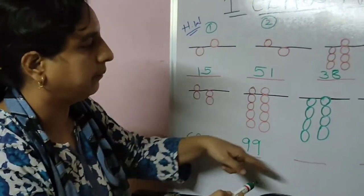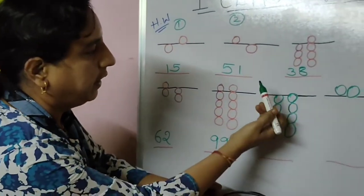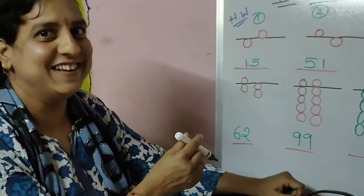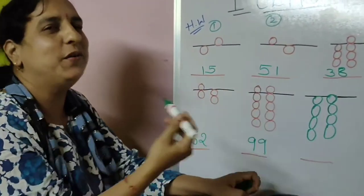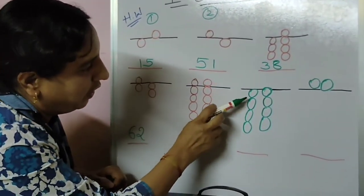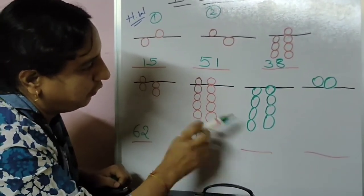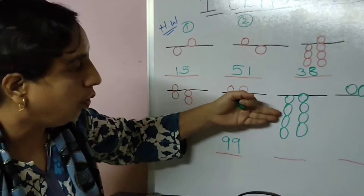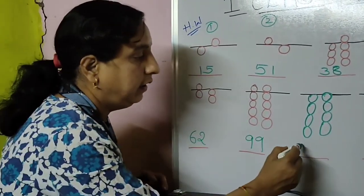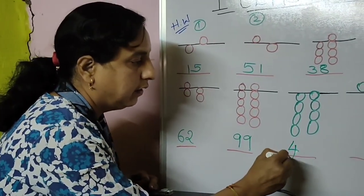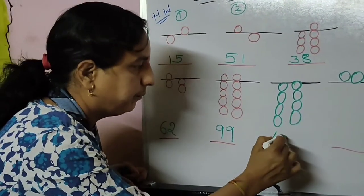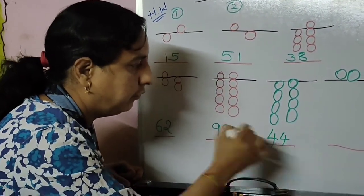Now here in tens — it came in green bits, isn't it? These are the green bits, these are the red bits. Color bits — 1, 2, 3, 4. These are lower bits, four bits are there. So what do I have to write here? Four. In tens rod four bits — again forty-four.